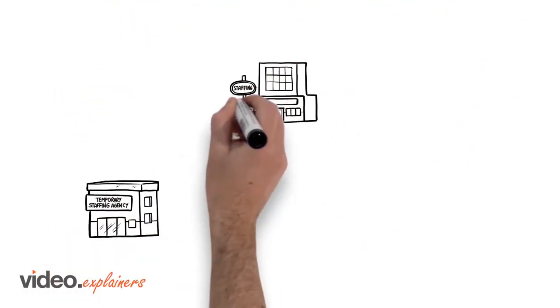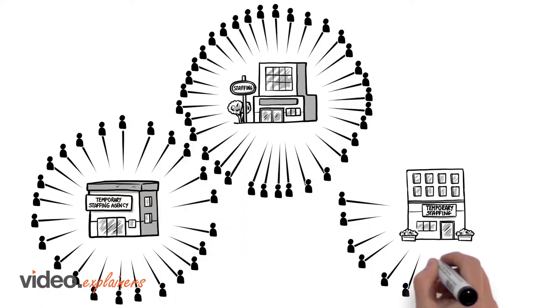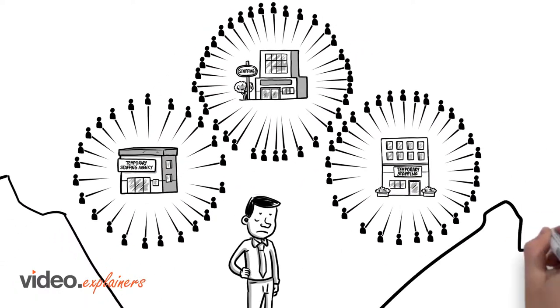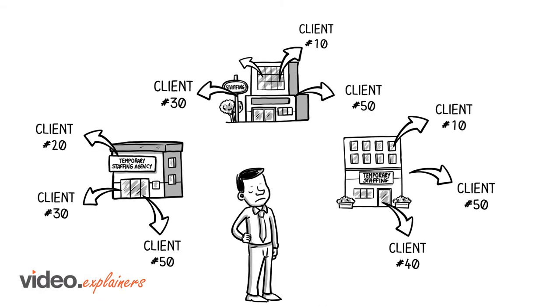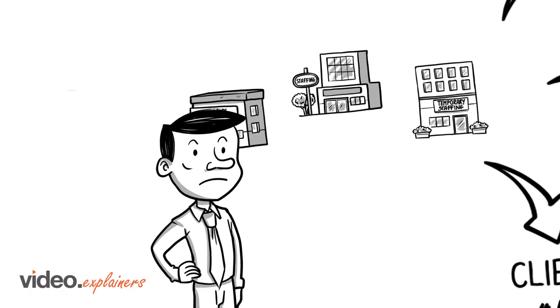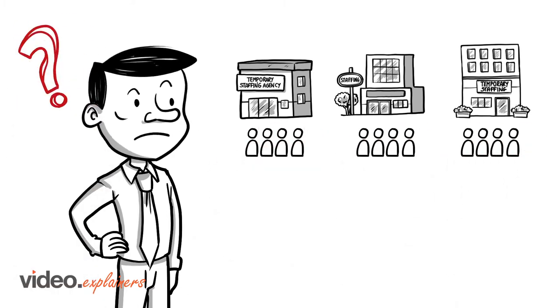Each temporary agency Tom contracted has an obligation to staff anywhere between 25 to 50 other clients, all located in the same market. They have no choice but to distribute their pool of recruits. In a tight labor market, how does each agency decide which client gets which employee?